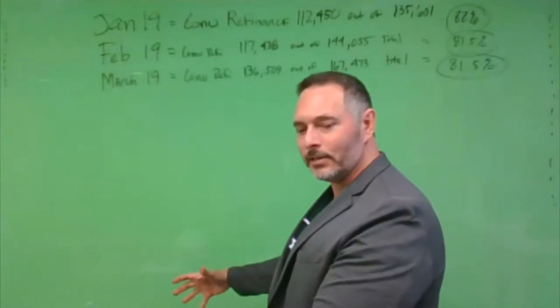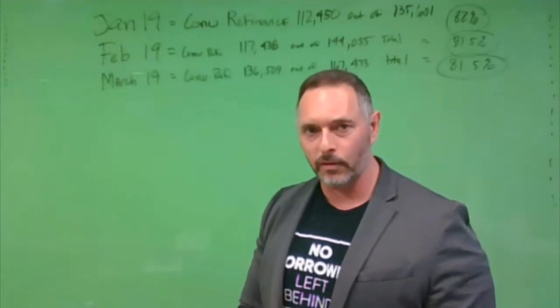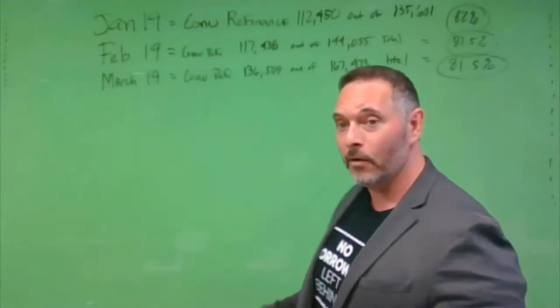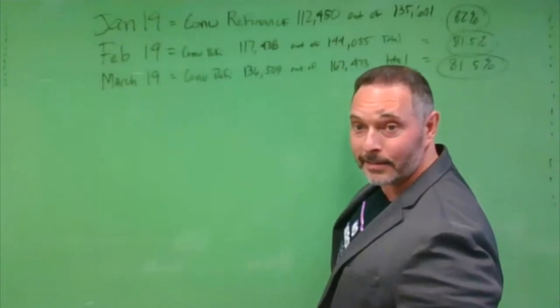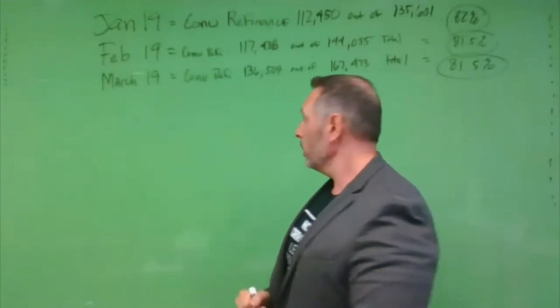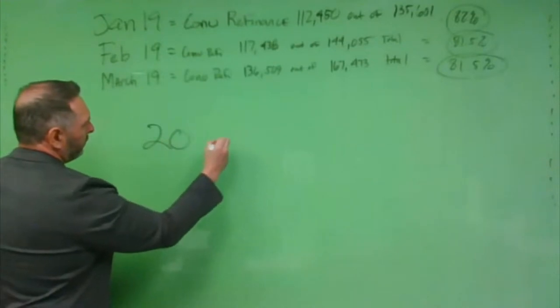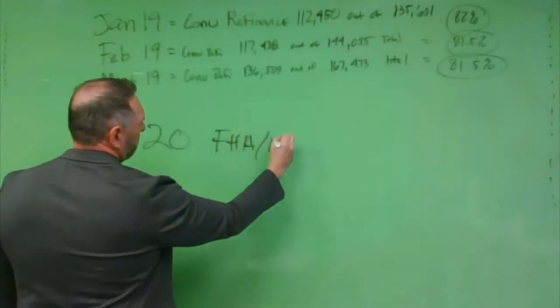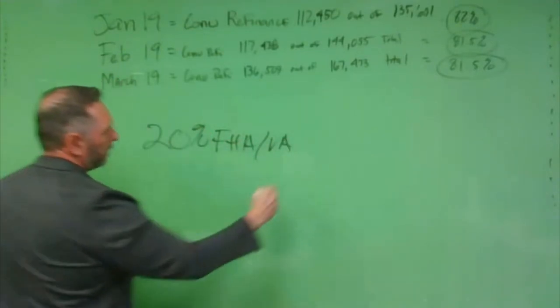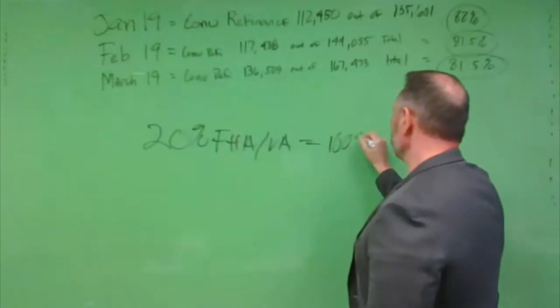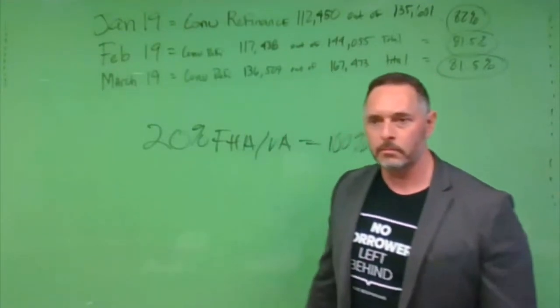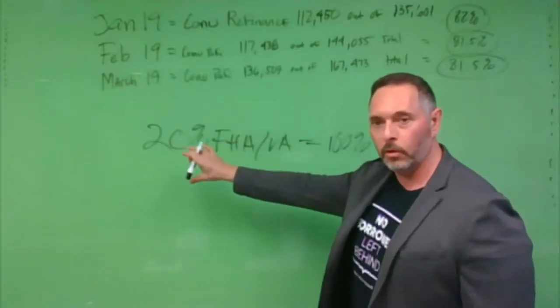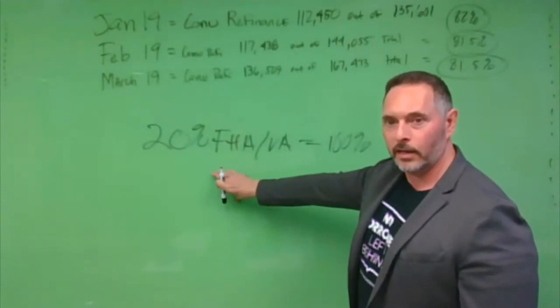80% of those transactions that are happening on a monthly basis are happening in conventional refinance. 100% of people are competing over 20% or less of the industry. So if you think about it, FHA and VA is about 20%. Every lender, 100% market saturation. Do you know anybody that doesn't do a Gavi loan? Everybody does.